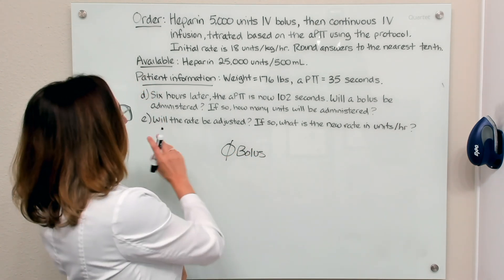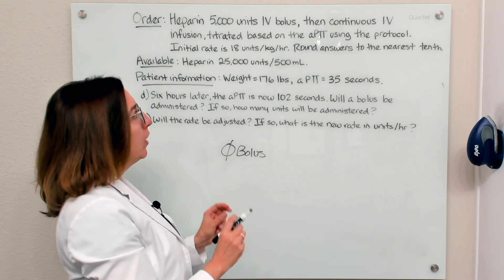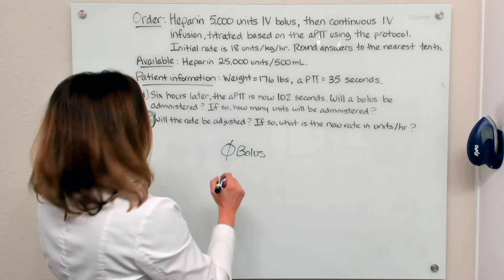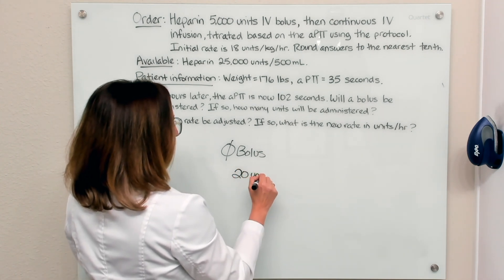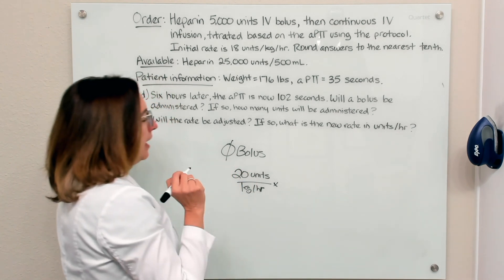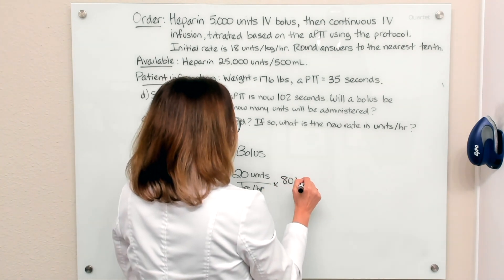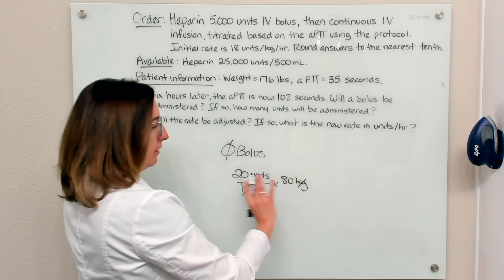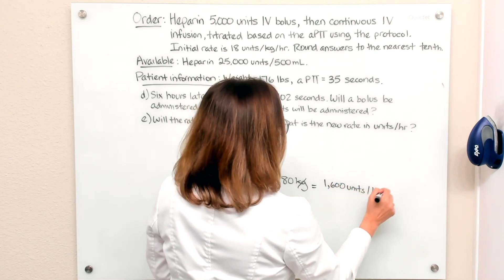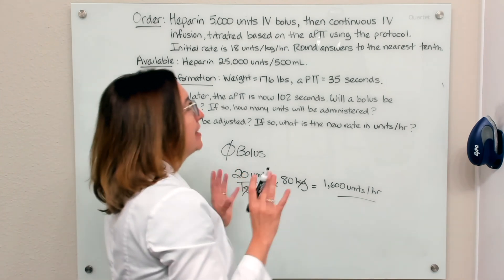For part E, we will adjust the rate. According to the protocol, we decrease by 1 unit per kilogram per hour. Our previous rate was 21 units per kilogram per hour, so the new rate is 20 units per kilogram per hour. Multiplying by the patient's weight of 80 kilograms gives 1,600 units per hour. That is the new rate, and that concludes the heparin titration example problem.